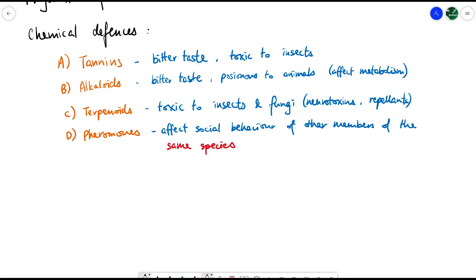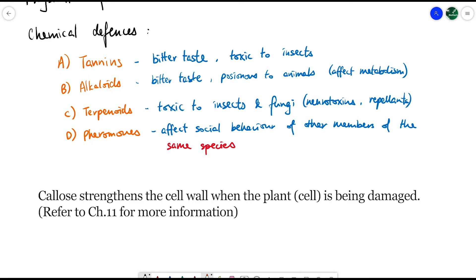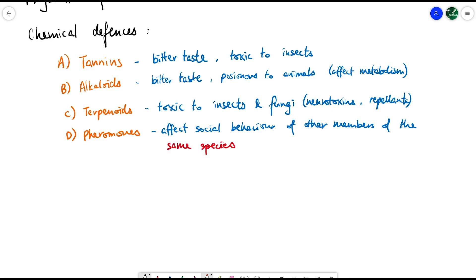For example, if a plant is being attacked by pests, it releases pheromones to nearby plants of the same species, signaling them to make callous. This makes leaves tougher and harder for insects to bite through.